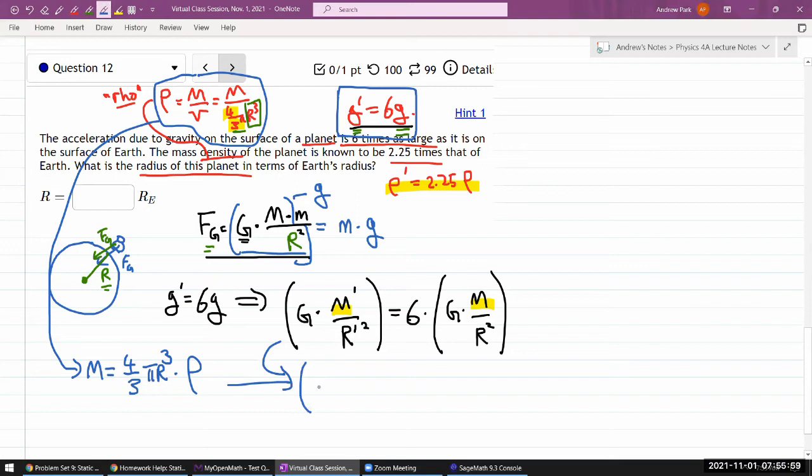Then what we get is G times the density of the - all of this. So four thirds pi r prime to the third power times rho prime. That's the mass of the planet divided by r prime squared is equal to six times G times four thirds pi r to the third power times density of Earth divided by radius of the Earth squared. I think this is a good place to cancel out a bunch of things because there are so many common factors here. G is common, I can just cancel them out. And that's six. I'll just leave that alone.